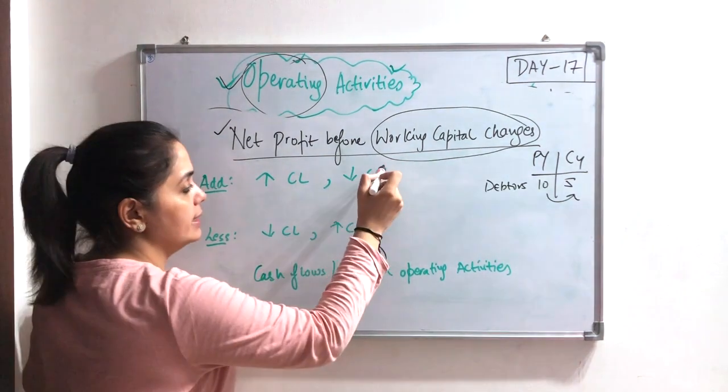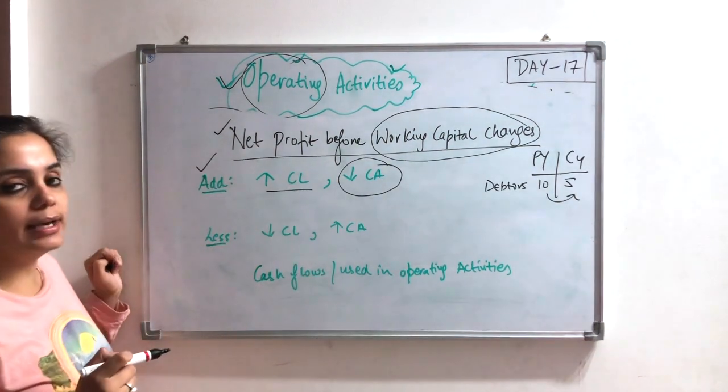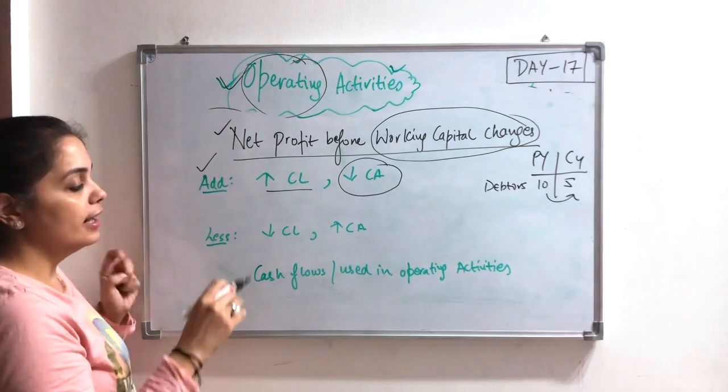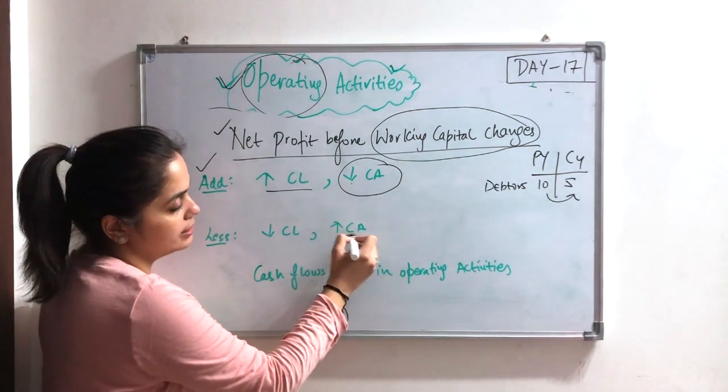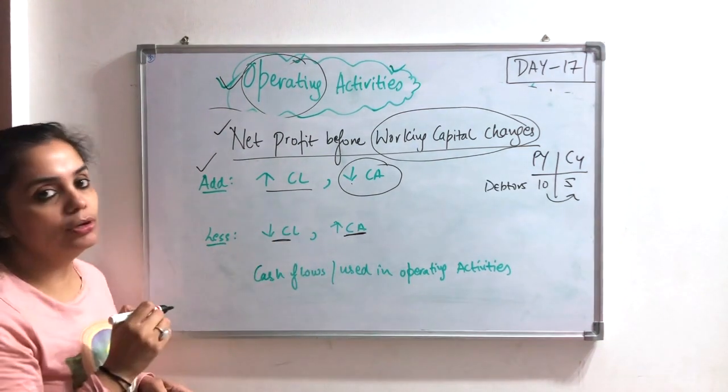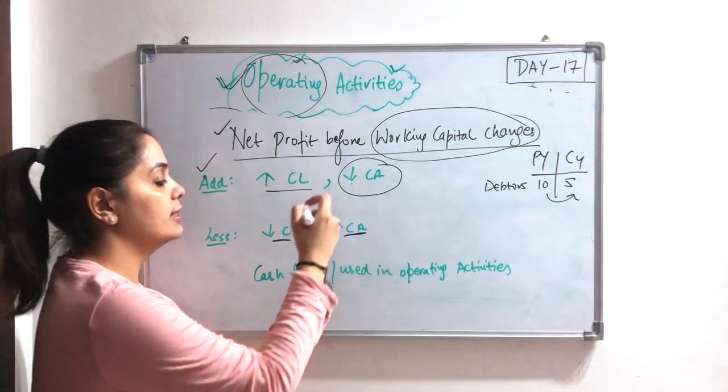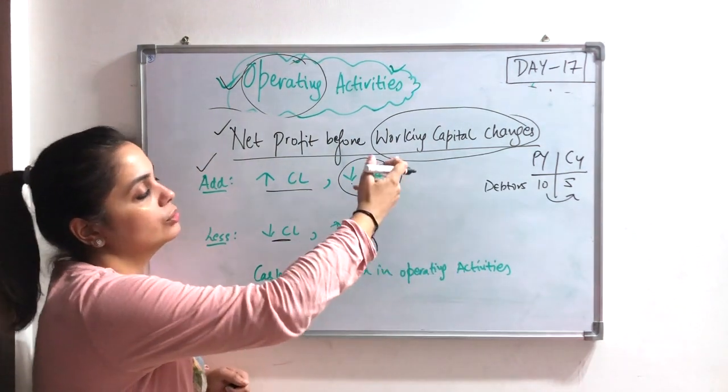If the current asset is decreased, then add. And if the current liabilities is increased, then add. And vice versa, if the current liabilities are increased, then add. And decrease the current liabilities, then less. If the current assets are increased, then less. And if they are decreased, then add.